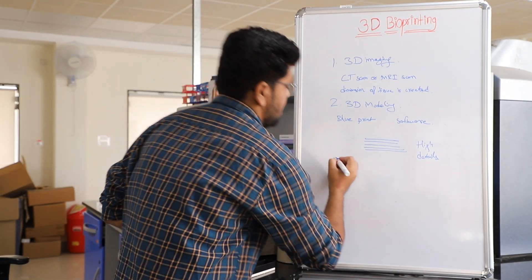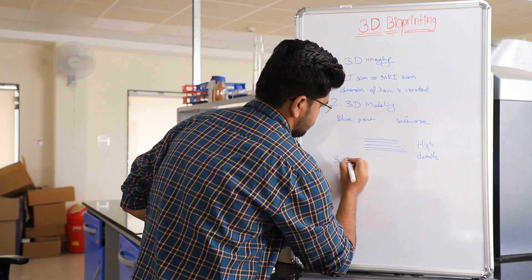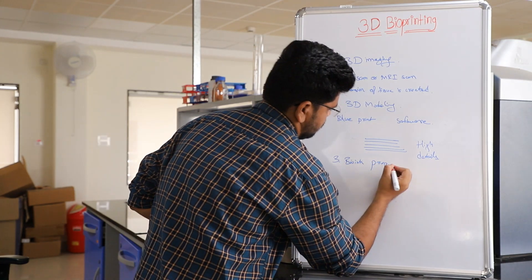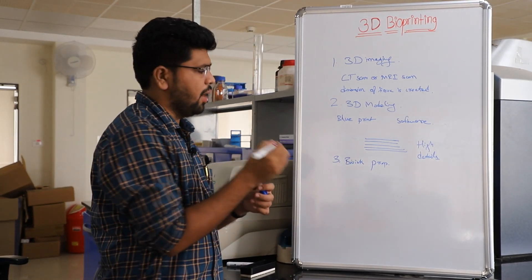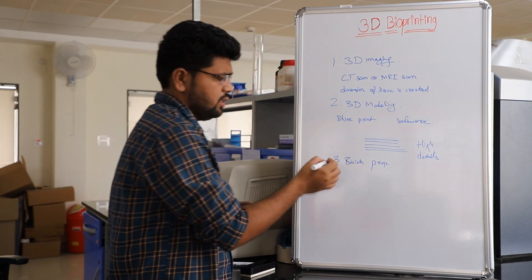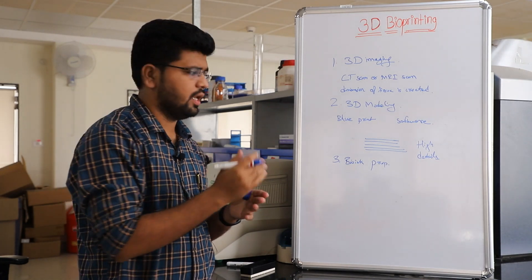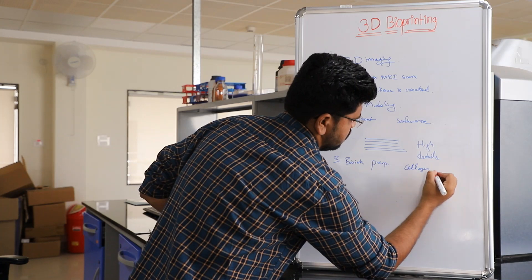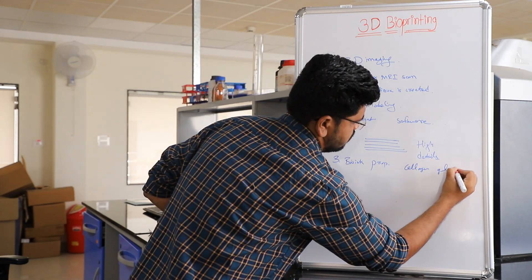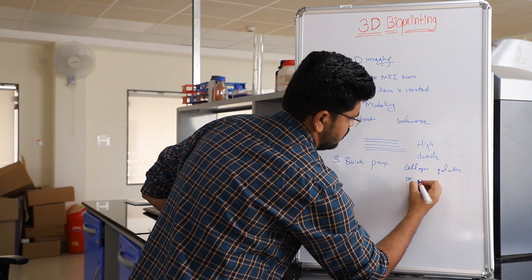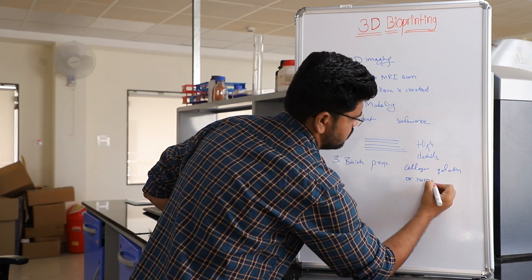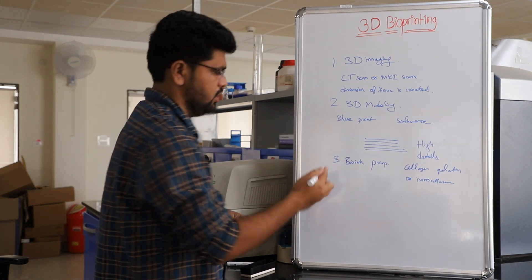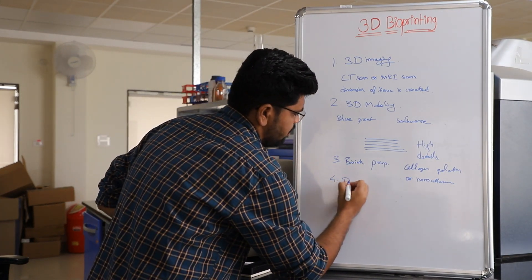Our third step is bioink preparation. Here in bioink preparation, living cells and compatible bases like collagen, gelatin, or nanocellulose are combined to make our bioink. Then our fourth step is printing.